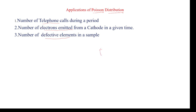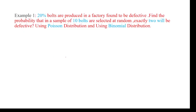The formula is P(x) = e to the power minus lambda, multiplied with lambda to the power x, divided by x factorial, where lambda equals n into p and is constant. There are two conditions: the number of outcomes should be two, there should be an infinite number of trials, and the success rate should be less. Here is one example: 20% of bolts produced in a factory are found to be defective, so the success rate p equals 20%, which is 0.2.